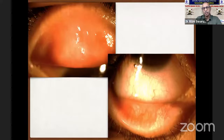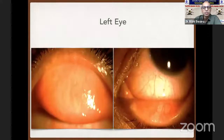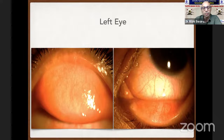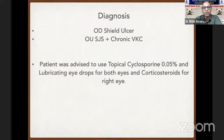The right eye had a shield ulcer-like appearance with a plaque on the cornea with lots of staining. The tarsal conjunctiva was very inflamed with lots of papillae, thickened conjunctiva, and keratinization at the lid margin in both upper and lower tarsal conjunctiva. The left eye also showed a lot of papillary reaction and keratinization in the center of the lids. Tear film break-up time was 8 and 7 seconds in right and left eyes, and Schirmer's was normal.